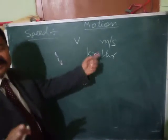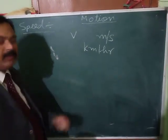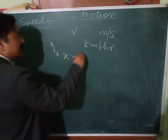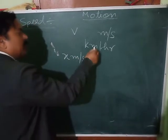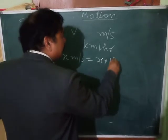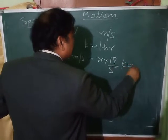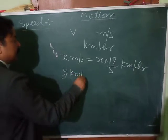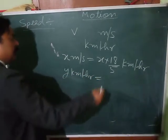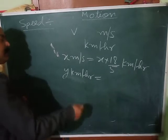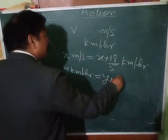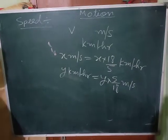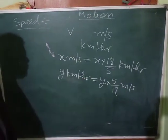You will sometimes need to convert speed from meter per second to kilometer per hour, or from kilometer per hour to meter per second. If it is given as x meter per second and you want to convert to kilometer per hour, multiply by 18/5. These are the conversion factors.